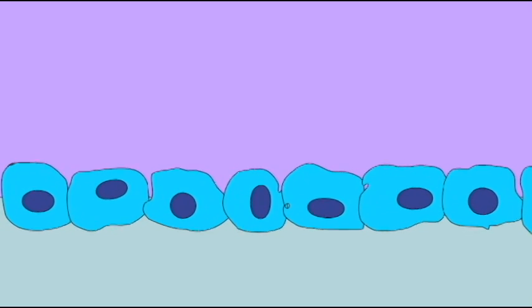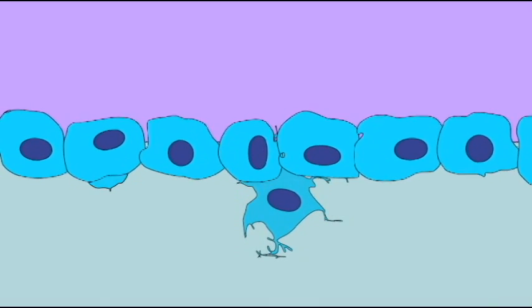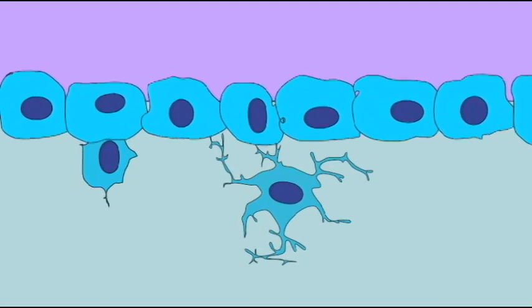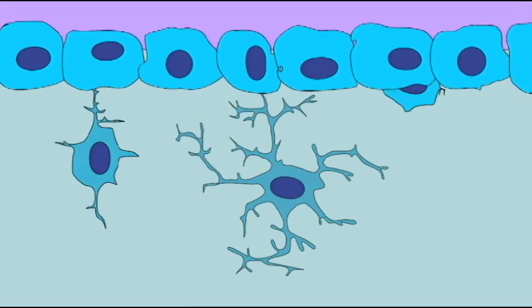When bone grows appositionally, the osteoblasts of the periosteum lay down new layers of bone. Thus the bone grows by adding to the outside, much the way that the rings of a tree add to the outside.